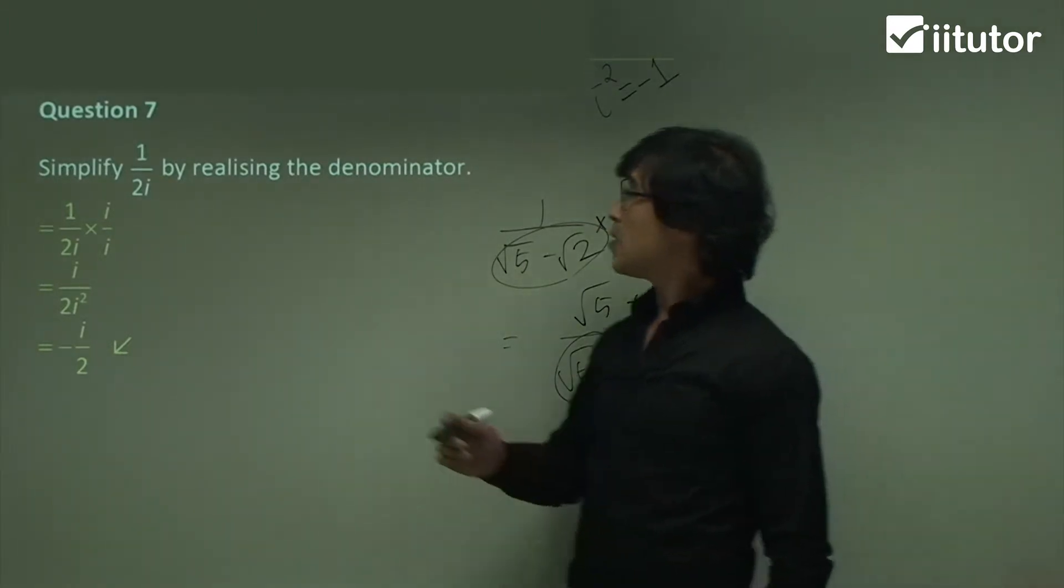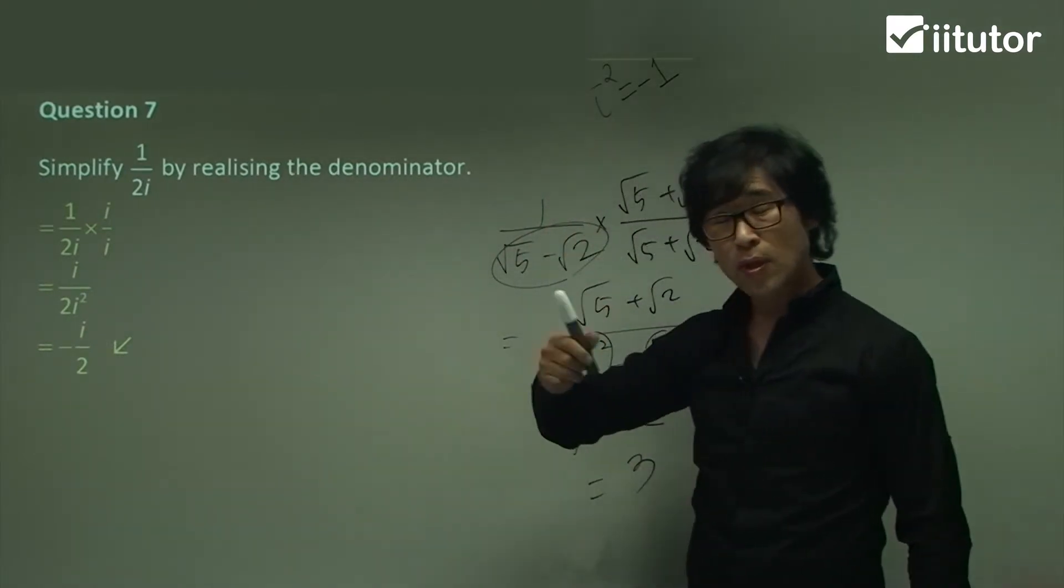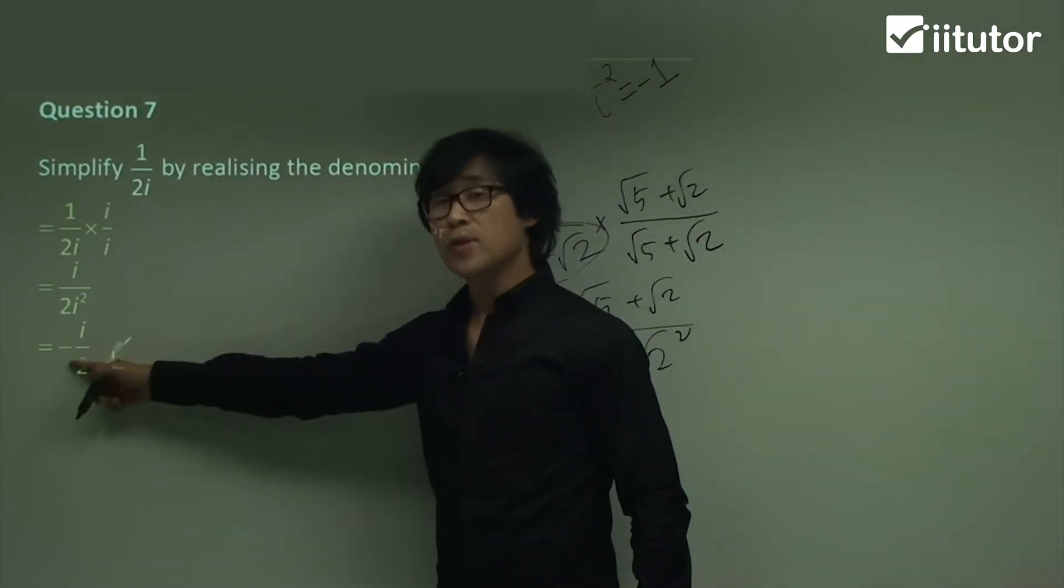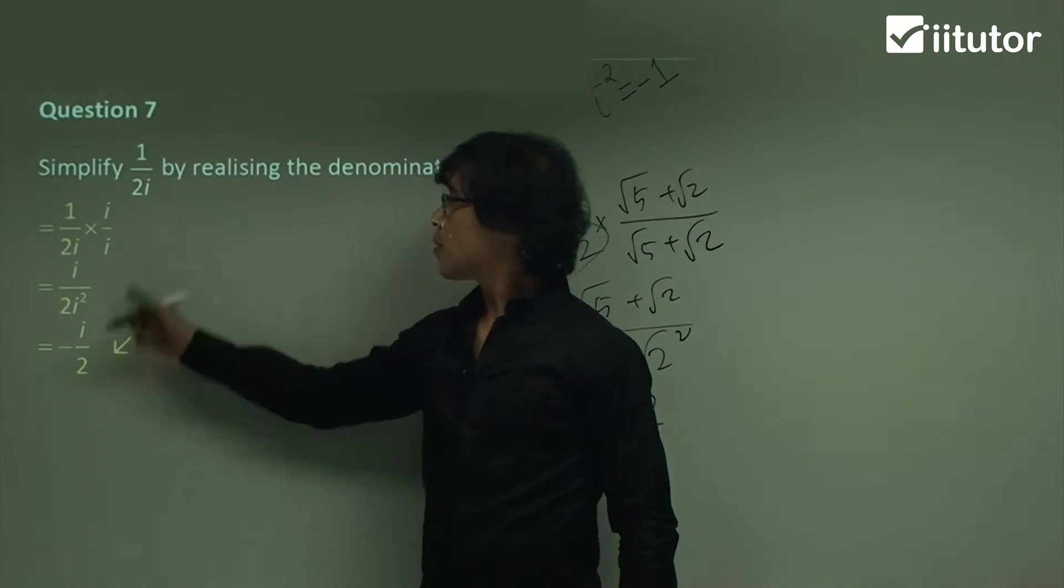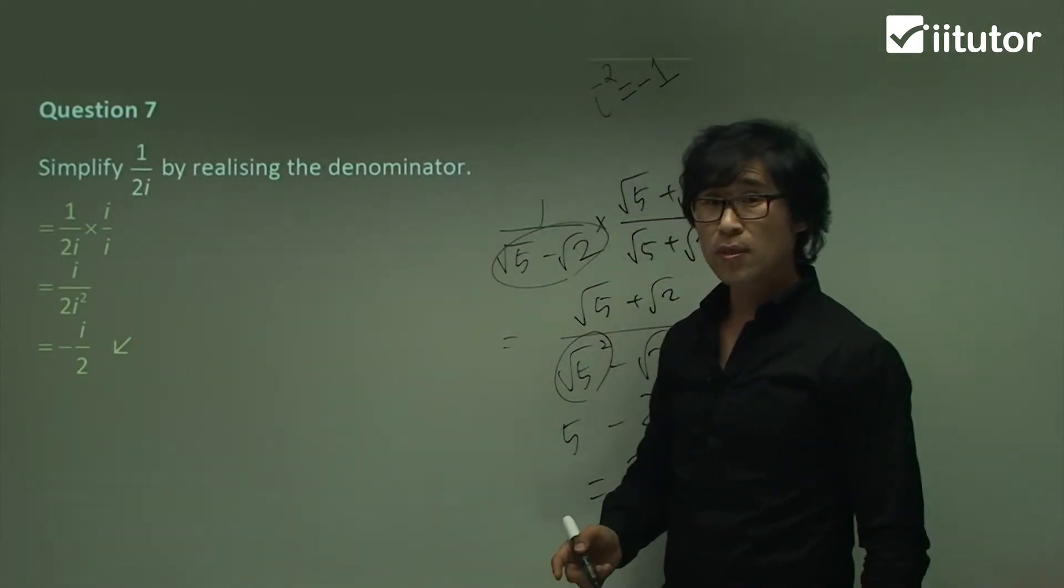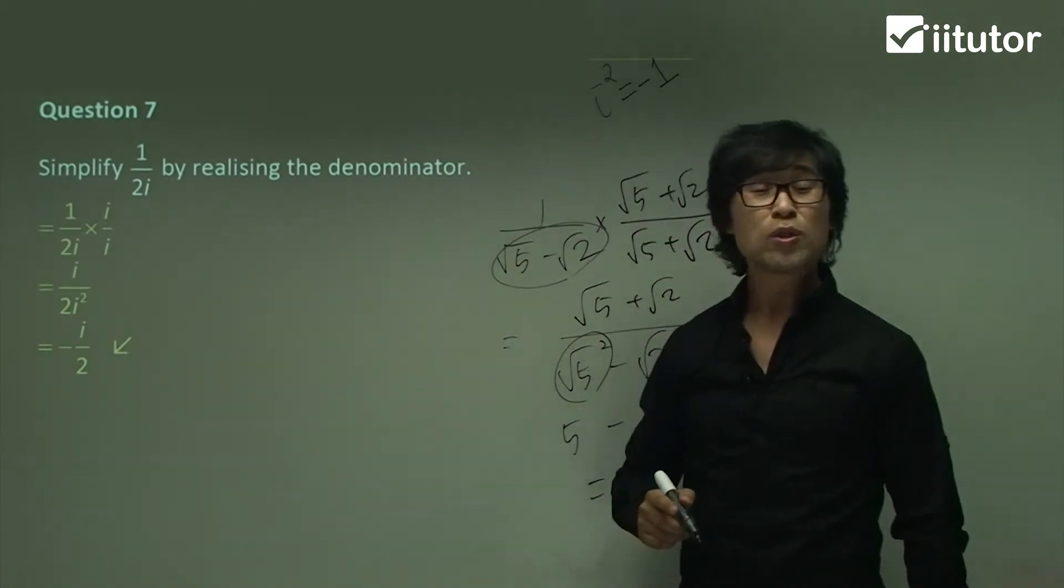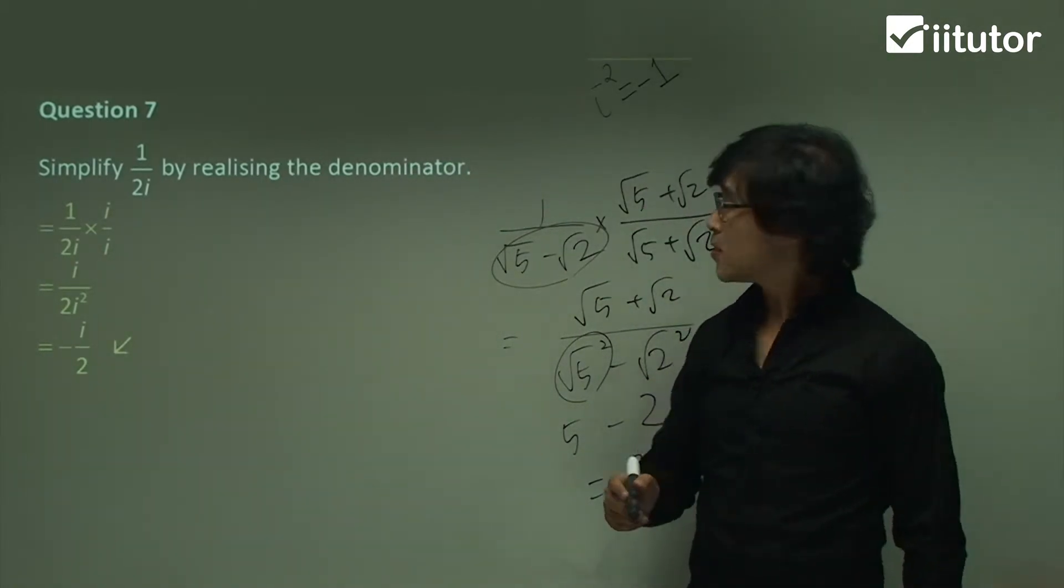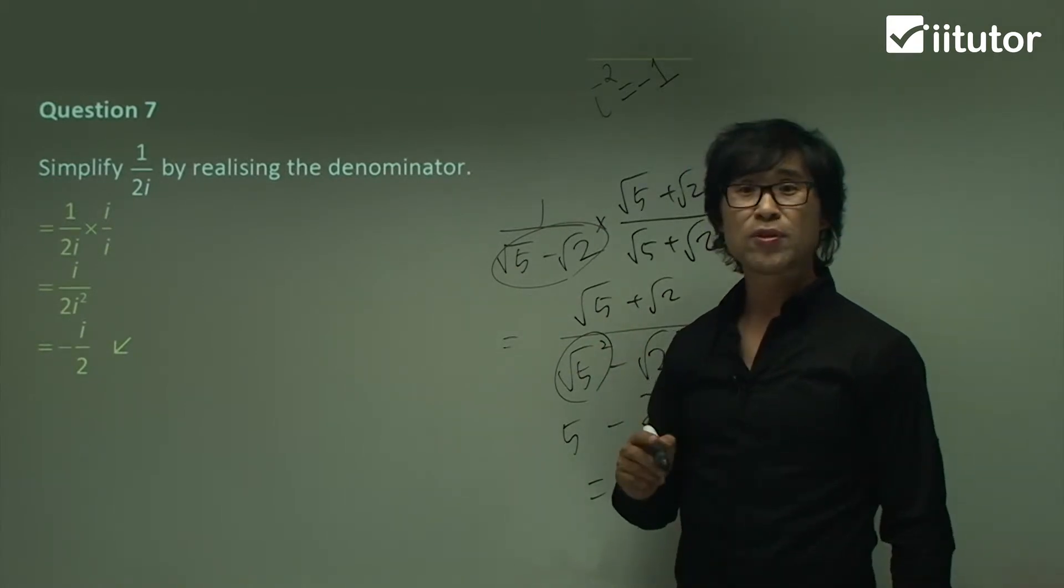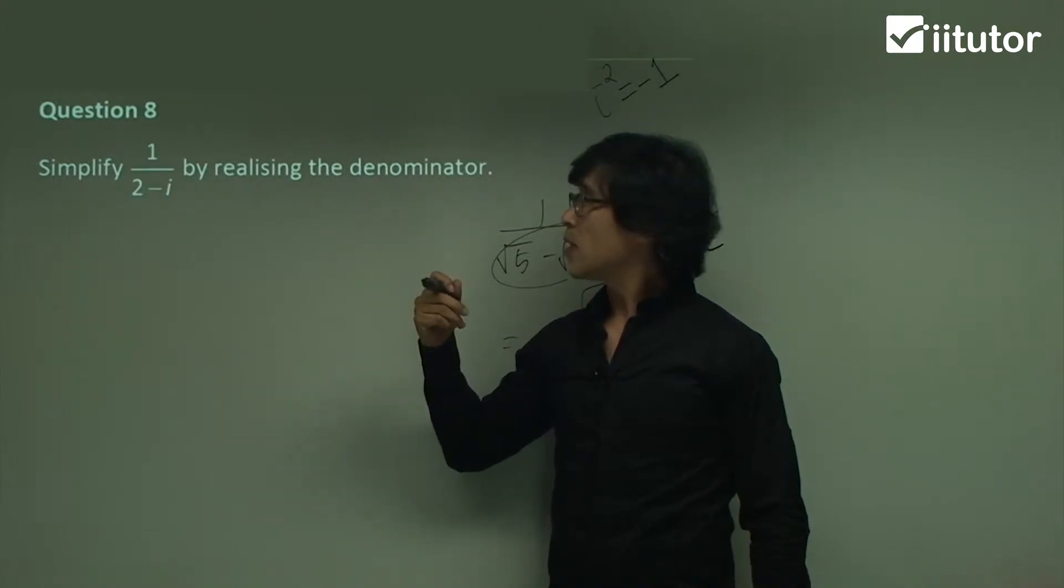It's just minus i divided by 2. Understand this? So now, what's the question? Realizing, make the denominator be real number. Well, remember, initially, the question was having 2i, which is the complex number. Now, the denominator becomes 2, which is real number. So that's the very first question, which is the simplest question of realizing the denominator.